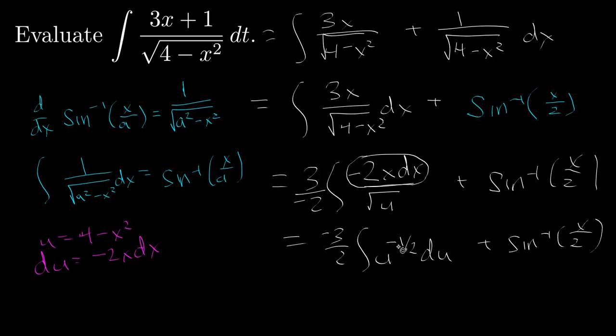To anti-differentiate, I have to add 1 to the exponent, and that's going to give me u to the 1 half, and I multiply by the reciprocal, which is 2. So that's going to give me just a negative 3 coefficient plus the arc sine of x over 2. And now the final step is just to replace 4 minus x squared with that u.